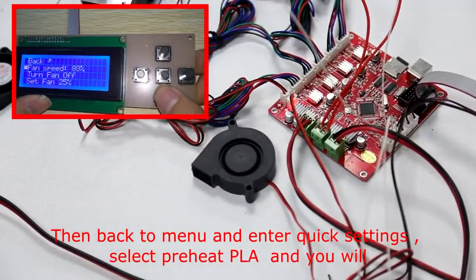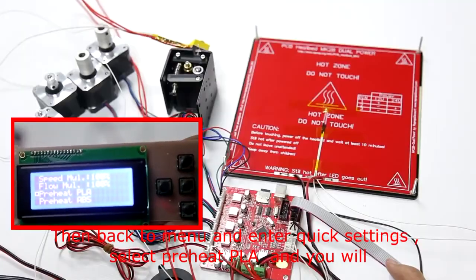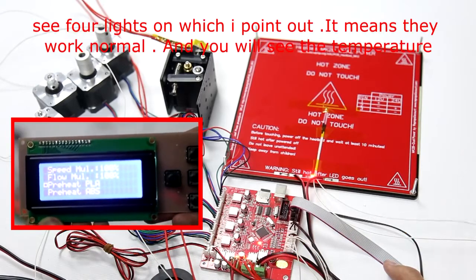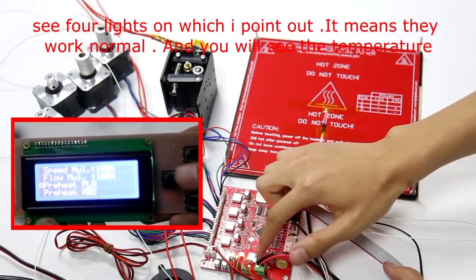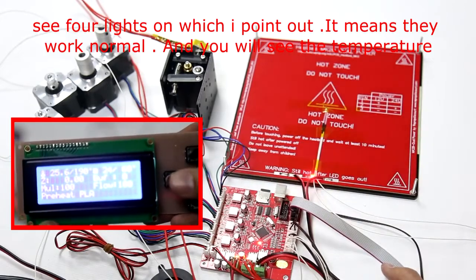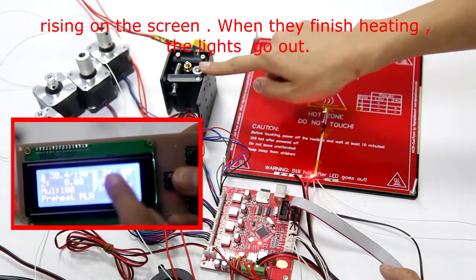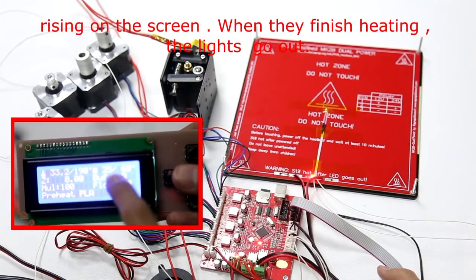Then back to the menu and enter quick settings. Select preheat PLA and you will see four lights turn on which I point out. It means they work normally and you will see the temperature rising on the screen. When they finish heating, the lights go out.